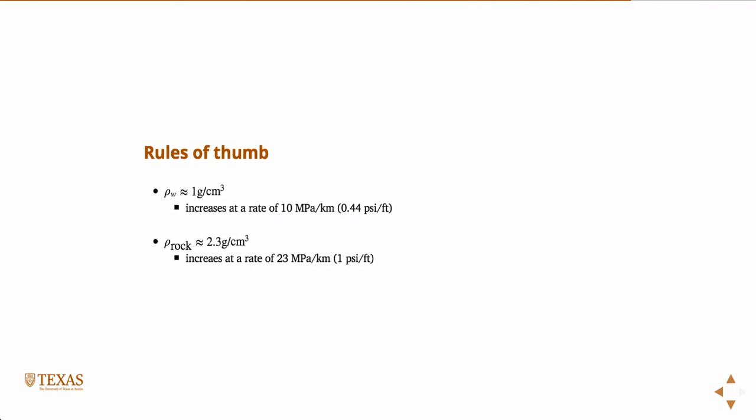So a couple rules of thumb. The density of water is one gram per centimeter cubed. That's, in fact, the definition of a gram. That's how it came up with it. And that's what a gram is. The mass of a cubic centimeter of water. So that's easy. And that increases at a rate of about 10 megapascals per kilometer. So that's something that's pretty easy to remember, 10 megapascals per kilometer. That's how the stress, the overburden stress increases. 10 megapascals per kilometer.